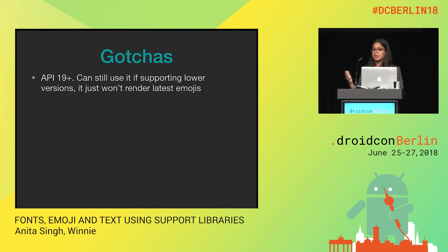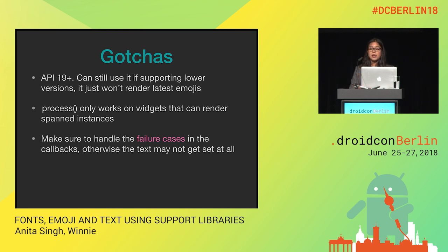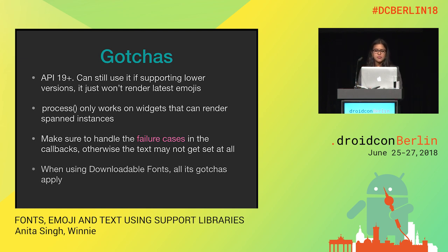EmojiCompat gotchas: it is API 19 plus — you can still use it if you're supporting lower OS versions, it just won't render the latest emojis. The process method only works on widgets that can render spanned instances, so others may not be able to render emojis. Make sure to handle the failure cases — it's easy to set text in uninitialized state and not handle the failure, but then the user won't see text at all. Seeing tofu is better than not seeing text. And if you're using EmojiCompat with downloadable fonts, all the related gotchas apply, like being dependent on Google Play services.